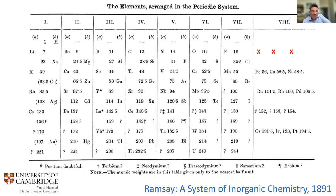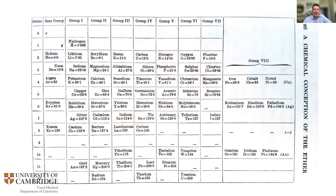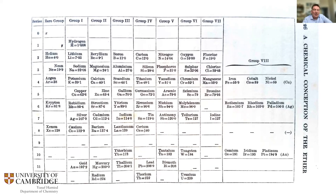He actually suggested these three gases could be named after the Latinized names for England, Scotland, and Ireland: anglium, hibernium, and scotium. So we nearly ended up with our anglium! But of course it turned out to be just a single gas — argon. Mendeleev also had to place these elements, and he actually thought there might be two elements lighter than hydrogen above helium, one of which — the lightest of all — he proposed to name after Isaac Newton: newtonium. And that's where we must finish.